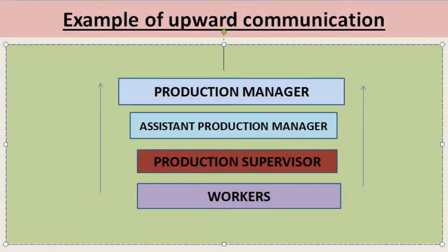Let's move to one example of upward communication. As you can see in this flowchart, this is a good example. The flow of upward communication is from subordinate to superior. Here the subordinate is the workers, then the production supervisor, then the assistant production manager, and finally the production manager. If a worker wants to convey their message to the production manager, they have to complete all these steps of hierarchy. There is a possibility that many barriers arise and information gets distorted, and there can be many challenges depending on the organization.